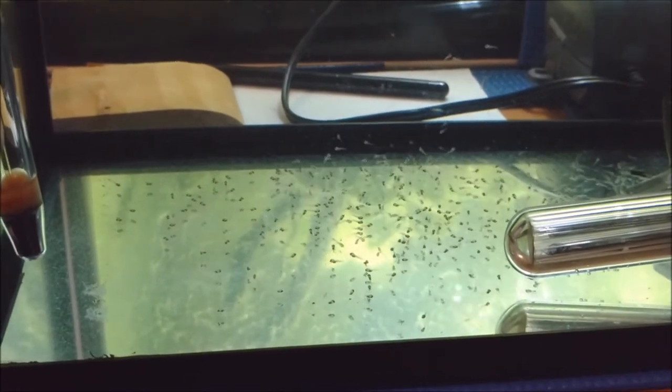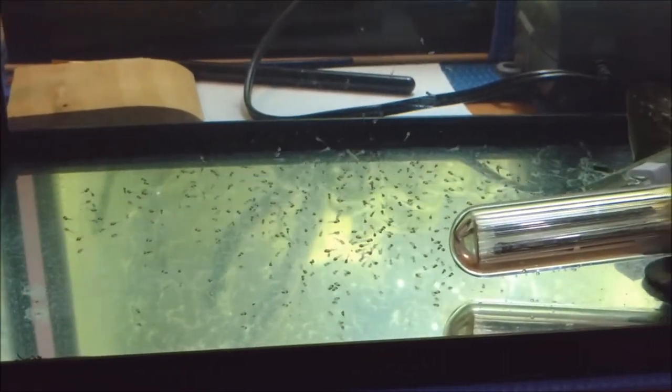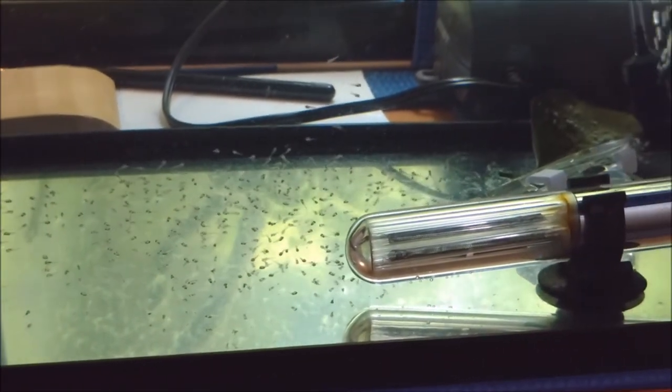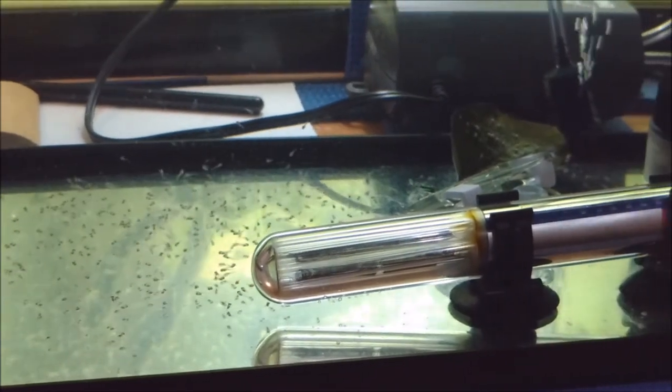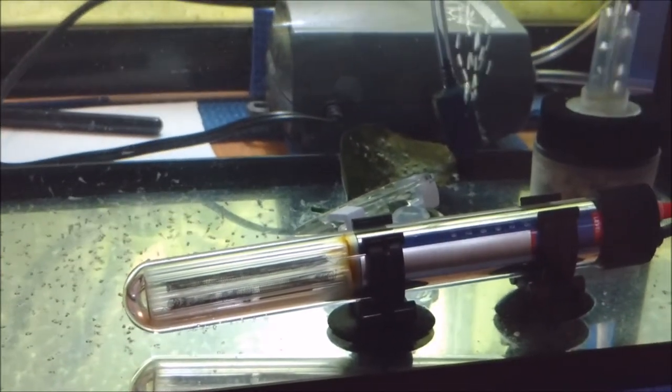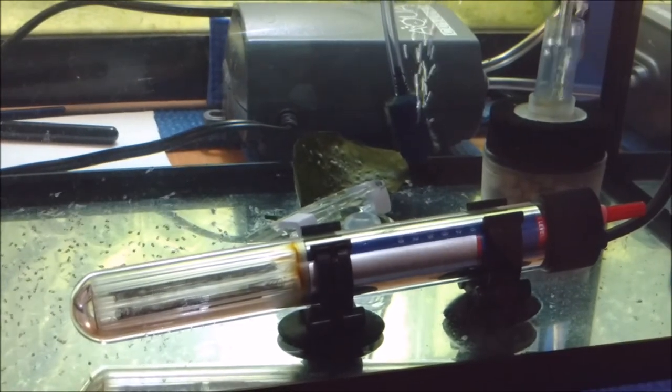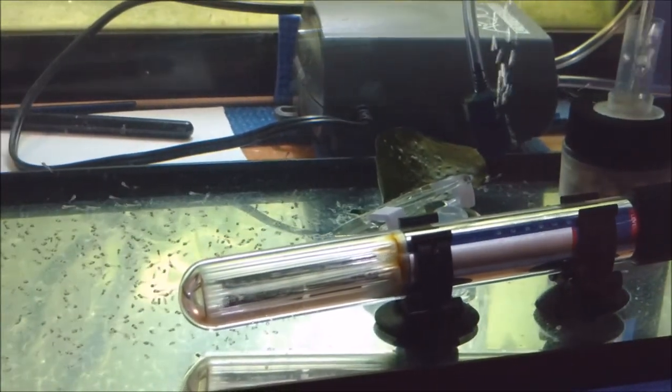So what I'm doing is just feeding them with microworms twice a day to keep their diet, hopefully, up to par. Then I also added a sponge filter there that was already seeded to help try to keep the water clear.